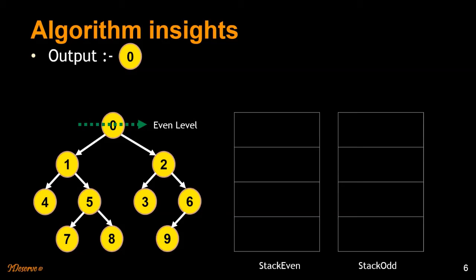Zero has two children — one and two — but they are at the odd level, so they are going to get pushed into the odd stack. We traverse the odd level from right to left and push the children onto the odd stack. Since the even stack is now empty, we look at the odd stack. We pop out elements from the odd stack and push their children into the even stack, since their children will be at the even level. We pop out one from the odd stack.